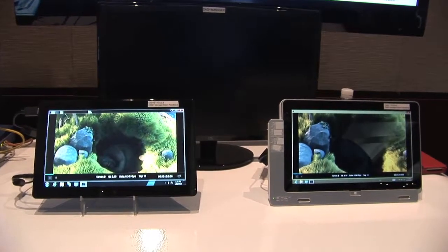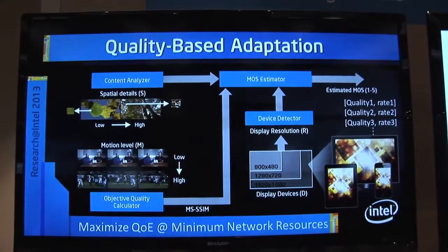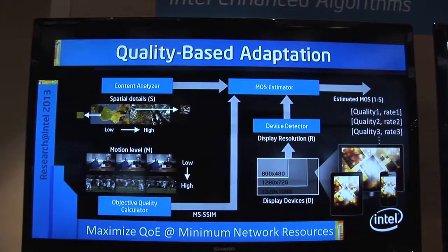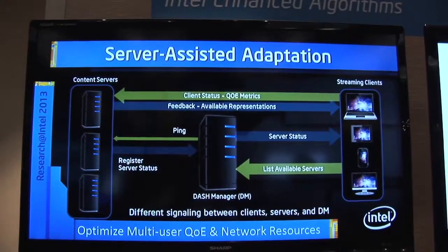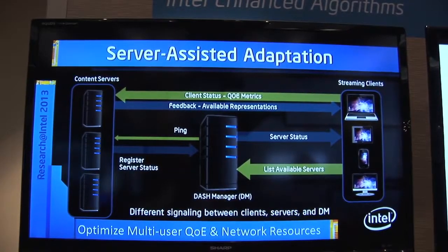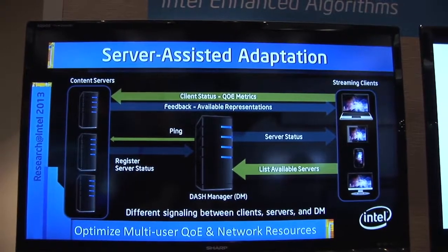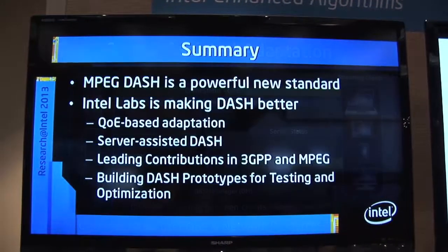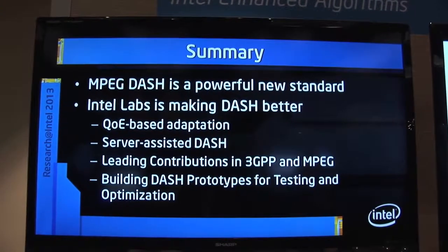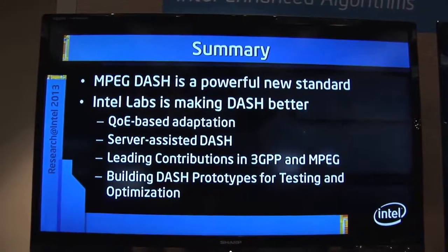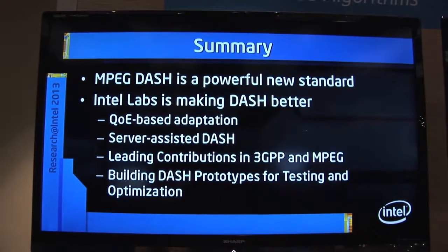Most existing approaches result in inefficient use of bandwidth and inefficient sharing between multiple clients and multiple servers, leading to many cases of buffering and low-quality streaming. What we are providing is basically a smarter system by using more information, such as the quality of the content, as a metric to assist in streaming decisions.